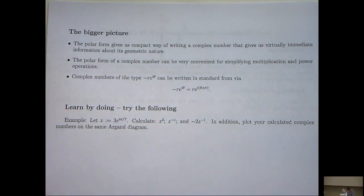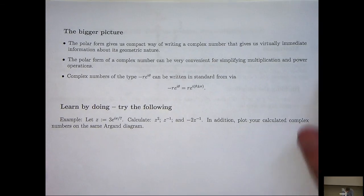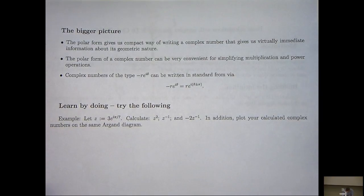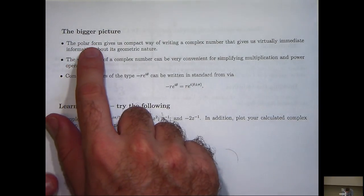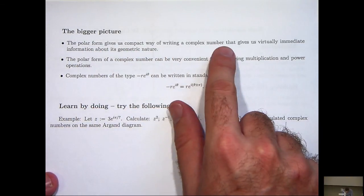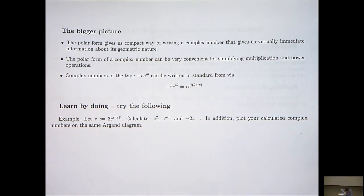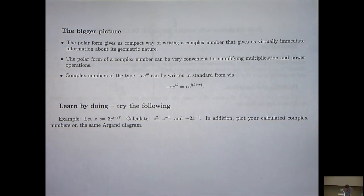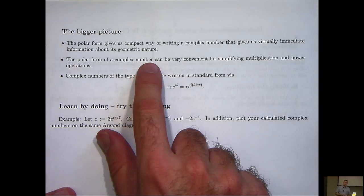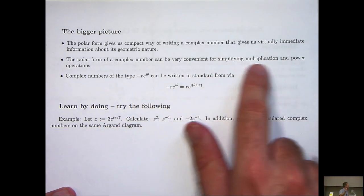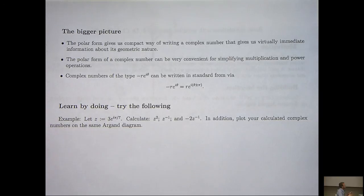But let's have a look at the bigger picture here. What are the underlying concepts? Well, the polar form of a complex number gives us a compact way of writing a complex number, giving us virtually immediate information about the geometric nature of the complex number. We have the angle to the positive real axis and the length to the origin immediately. Secondly, the polar form of a complex number is very convenient for simplifying multiplication and power operations. That's another excellent property of the polar form.